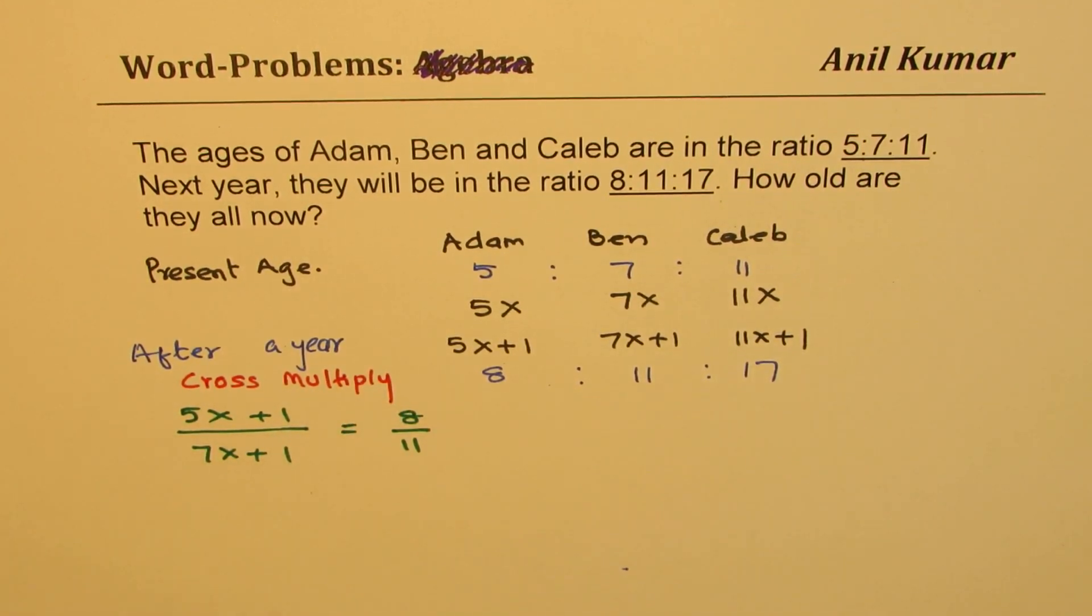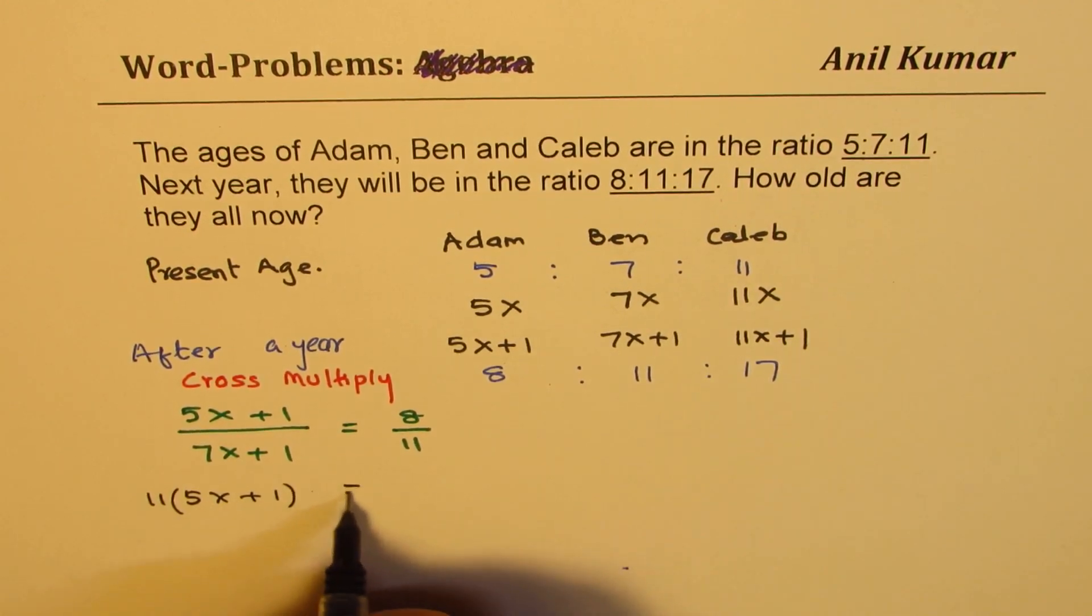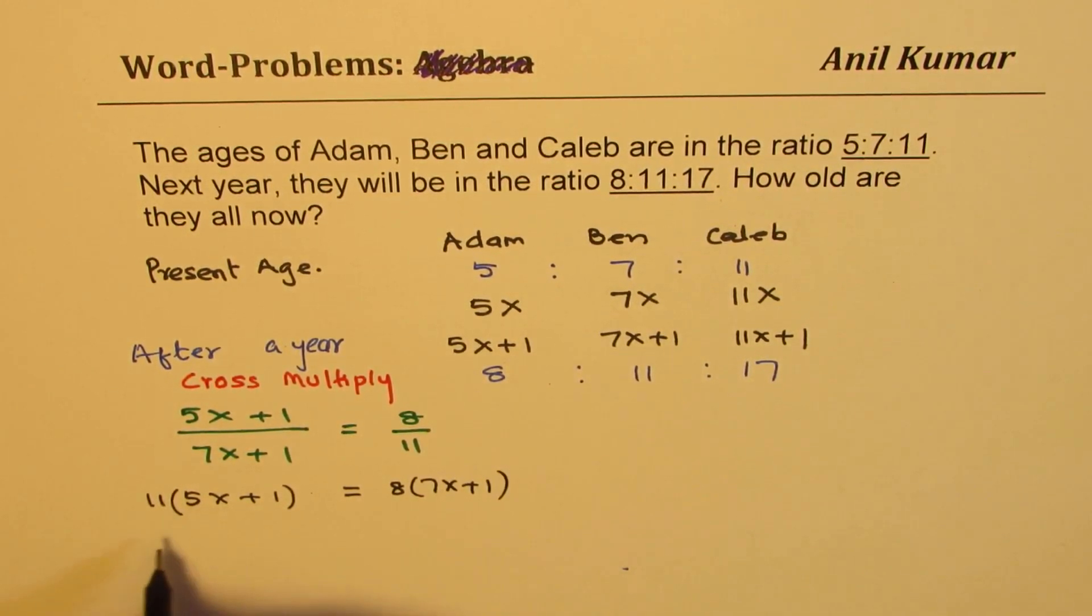So let's cross multiply and solve. You can actually pause the video now, continue with the solution, then check your answer. So when you cross multiply, it becomes 11(5x+1) = 8(7x+1). Now that is 55x+11 = 56x+8.